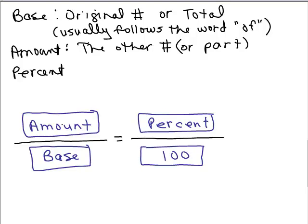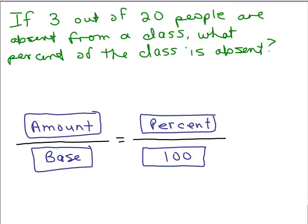What we have is that if I take the amount absent over the total number of students, it's the same thing as writing this other number over 100, which will end up being the percent. So what would the amount be and what would the base be? I always look for the word 'of' and it's the number after that that will usually always be the base. In other words, the base is the total number or the normal amount of students in the class. So our base here will be 20.